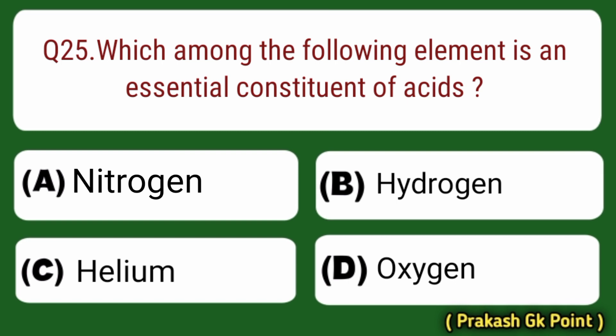Next question: which one of the following elements is an essential constituent of acids? Answer: Option B — Hydrogen.